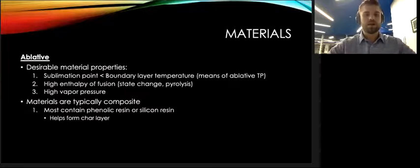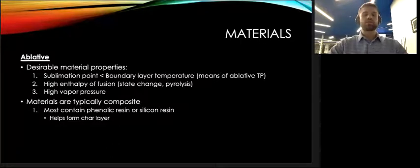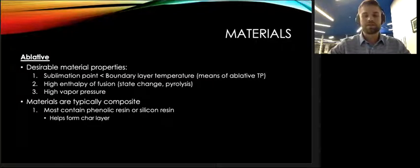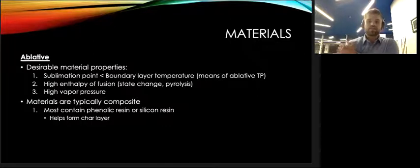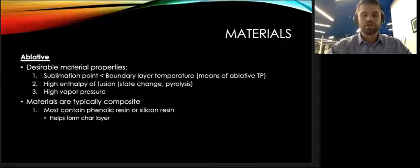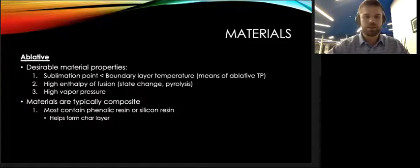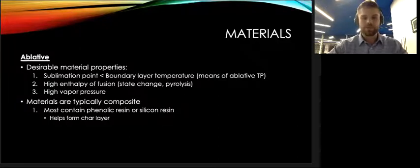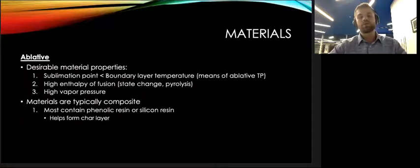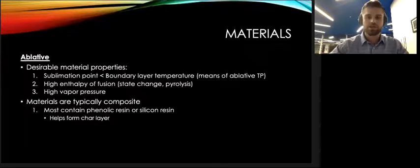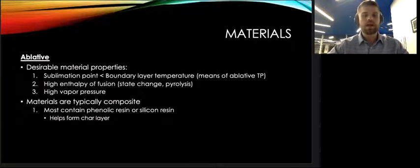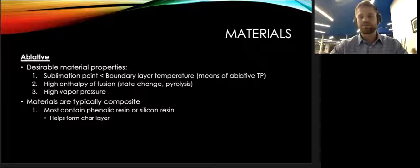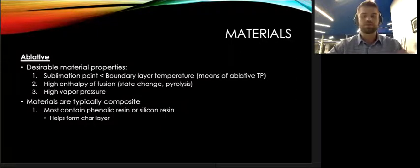So now more specifically moving towards ablative materials, some desired material properties include having a sublimation point lower than the boundary layer temperature. As previously stated, pyrolysis gas and transpiration is a huge means of cooling for ablative materials. Without having a sublimation point below the boundary layer temperature, that is not possible. Having a high enthalpy of fusion is important, and also a high vapor pressure. Having a high vapor pressure is important because it will allow the diffusion process of transpiration cooling to occur faster, creating more cooling. Due to all these material properties, it's hard to find all those in one, so ablative materials are typically composite, but most contain phenolic resin or some sort of silicone resin because these help form the char layer.